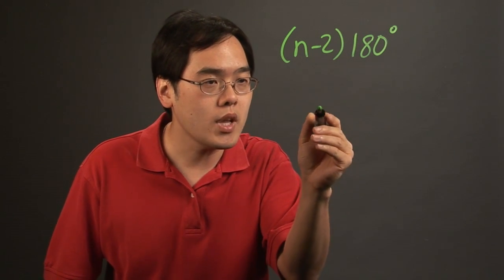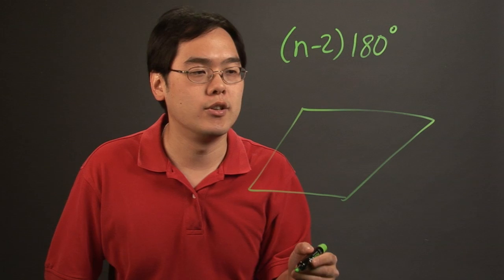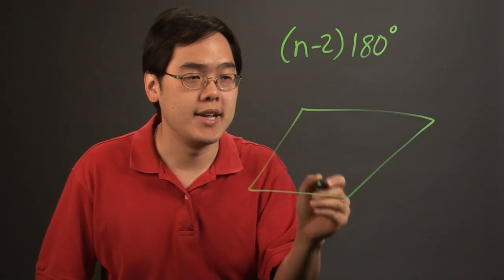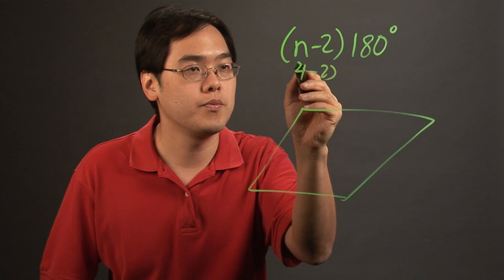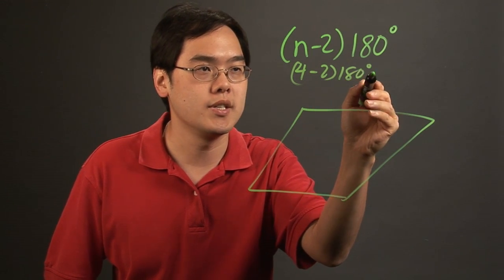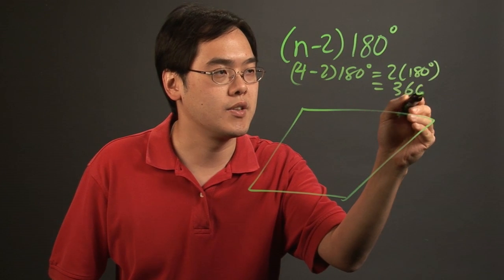So basically, for example, if you want to find out in terms of this quadrilateral how many degrees it has, since that's four sides, you just plug in four, so it'd be 4 minus 2 times 180 degrees and that's going to be 2 times 180 which is going to be 360 degrees.